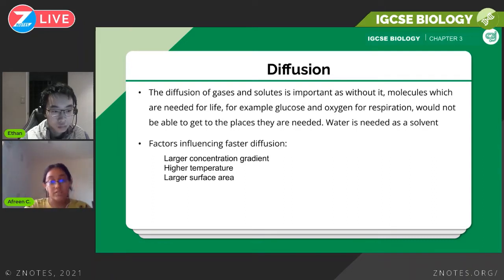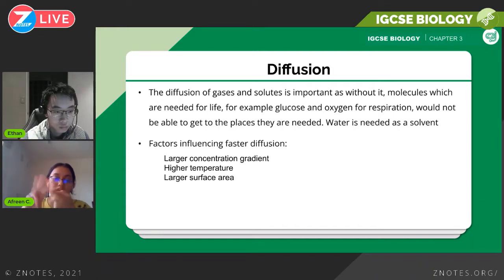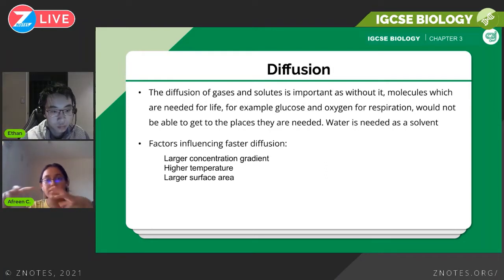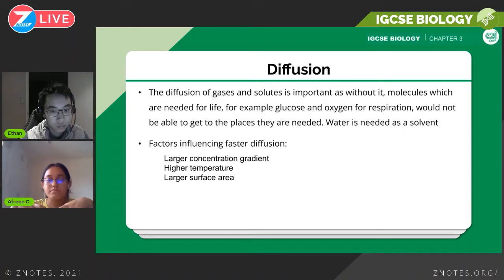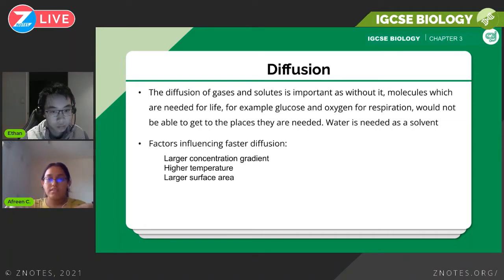There are three main factors affecting diffusion: larger concentration gradient, higher temperature, and larger surface area. A larger concentration gradient means the difference in concentration between two areas is greater.